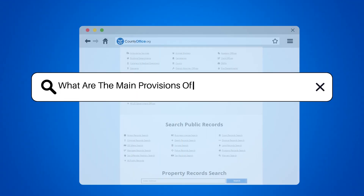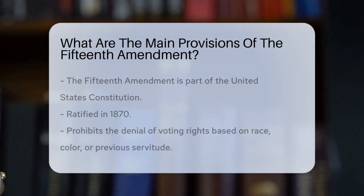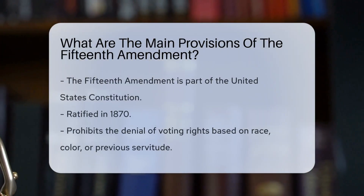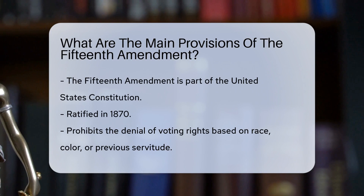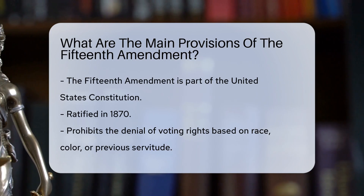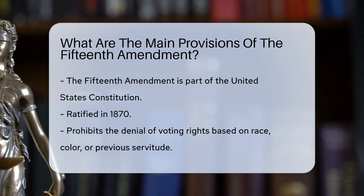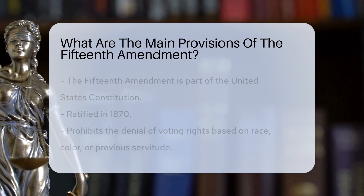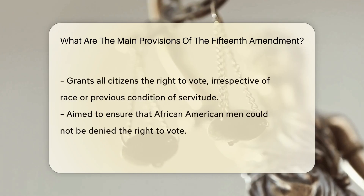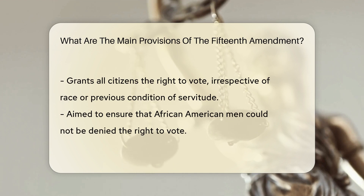What are the main provisions of the 15th Amendment? The 15th Amendment to the United States Constitution, ratified in 1870, prohibits the denial of voting rights based on race, color, or previous servitude.